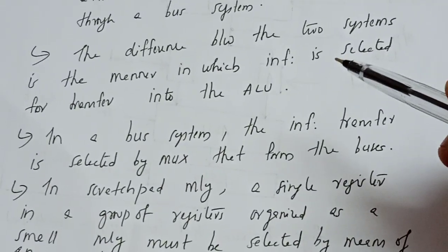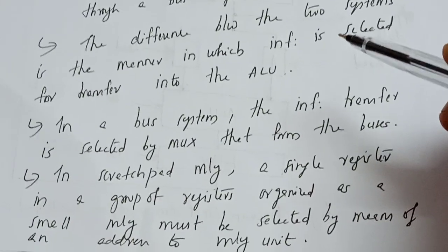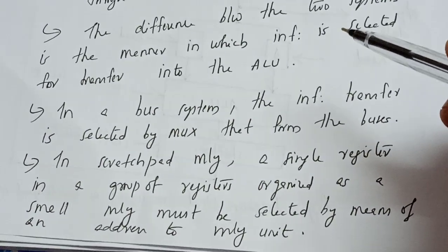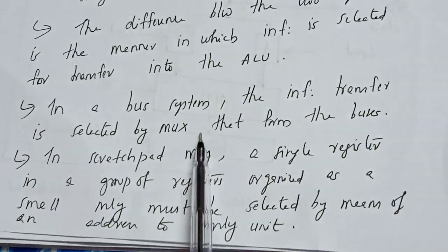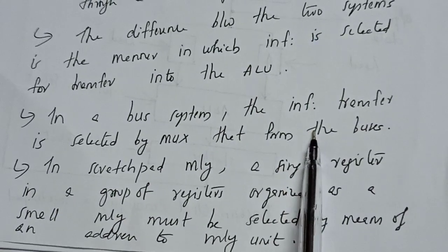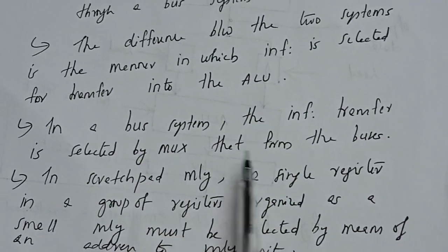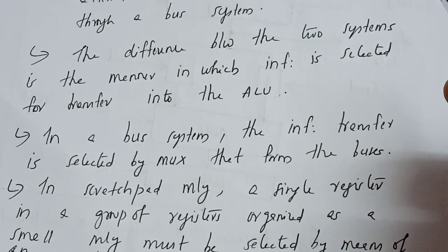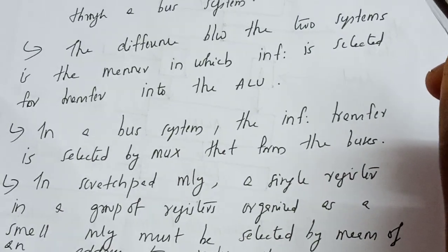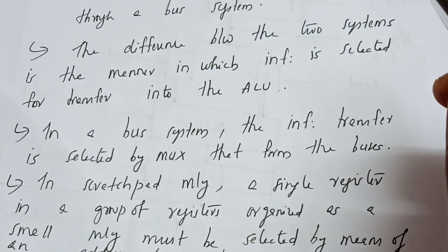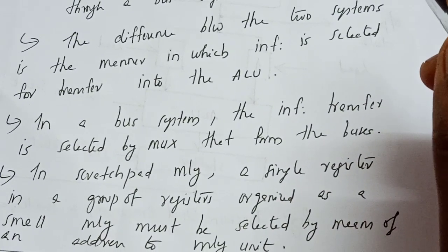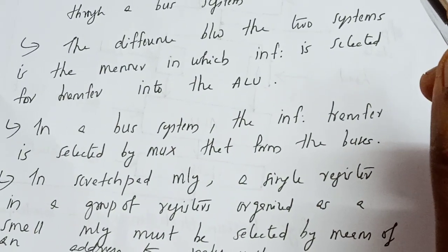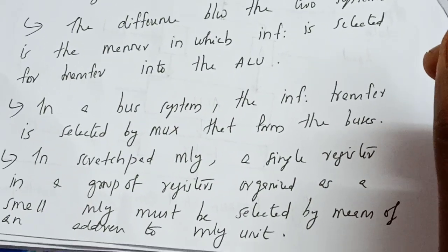The difference lies in the way information is selected and passed to the ALU. In a bus system, the information transfer is selected by a multiplexer that forms the buses — as we already saw in the last class. In that example, we used two muxes to select the input data to the A bus and B bus.